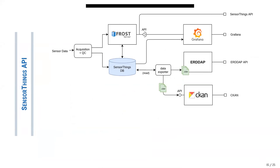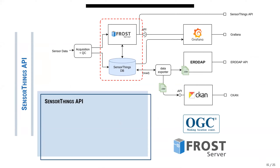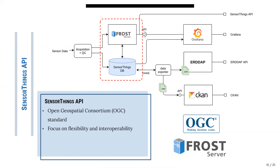Once we have this flagged data and we're sure it's good, we ingest it into a Sensor Things API system, which is a standard from the Open Geospatial Consortium focused on flexibility and interoperability. It allows us to manage data even if it has different origins. It uses a simple but powerful REST API and supports time-series data. We use the FROST server, which is the implementation from the Fraunhofer Institute. This is the core where we store all our data.